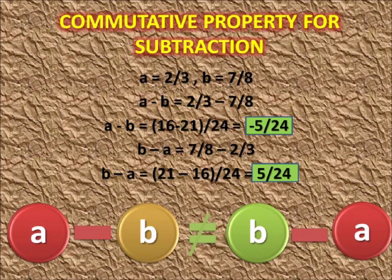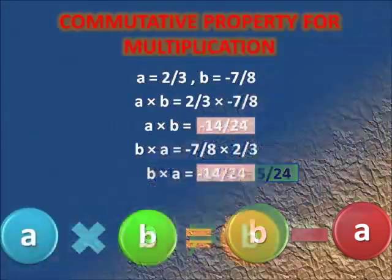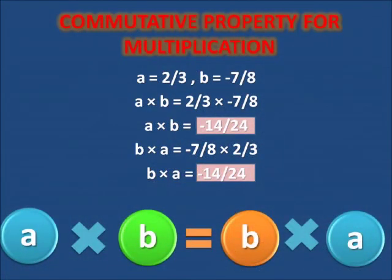So they are different. Hence we would say a minus b is not equals to b minus a — so subtraction is not commutative for rational numbers.